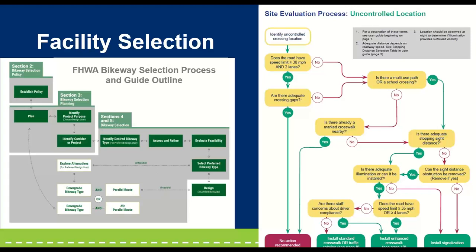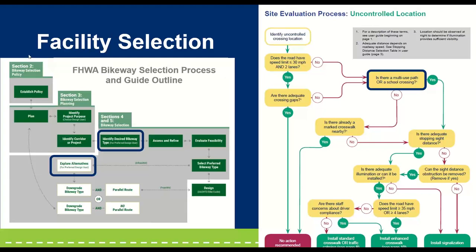You can find facility selection guidance from many sources, like FHWA guidance, such as this decision matrix from the FHWA bikeway selection guide, all the way down to local guidance, like this example of crossing treatment guidelines from Wichita, Kansas. Both of these examples incorporate design user and community context considerations. There's a step in the bikeway selection guide to explore alternative bikeway types based on the design user, and the crossing treatment decision matrix asks whether there is a school nearby, which would indicate that children should probably be the design user. You can customize and adapt these types of tools to your own needs, or develop your own like Wichita did.